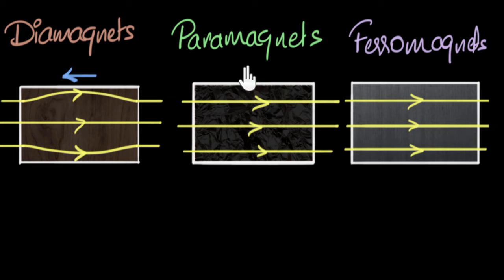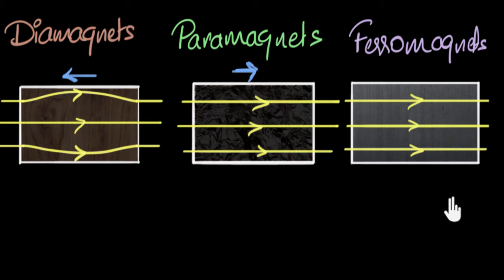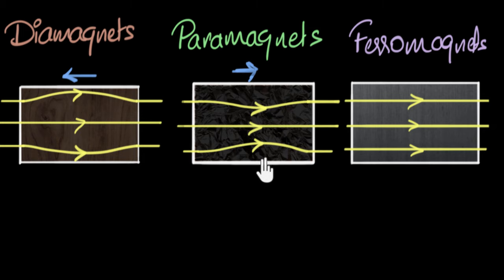Paramagnets have tiny permanent dipoles in random directions. When you apply a field, they all get aligned in the same direction, producing a very tiny magnetic field in the same direction. As a result, the total field inside becomes slightly higher than outside, so the magnetic field lines are slightly closer to each other. Both these effects — diamagnetic and paramagnetic — are very slight; I've exaggerated here.